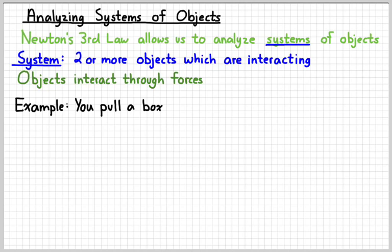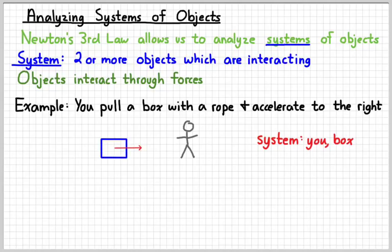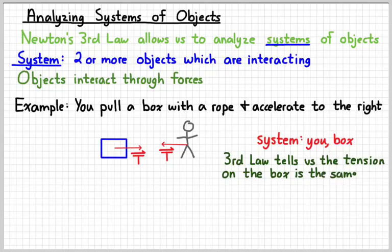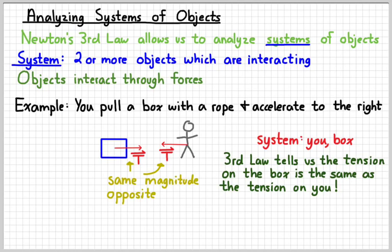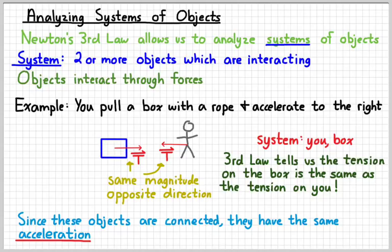Real simple example: suppose you pull a rope attached to a box, causing it to accelerate to the right. There's you and there's the box — the system is you and the box. You pull it to the right and it's going to pull you to the left. Newton's Third Law tells us the tension on the box is the same as the tension on you — those two forces have the same magnitude and opposite directions. Since the objects are connected, they're going to have the same acceleration. When two things are connected like this, we can always say they're going to have the same acceleration.